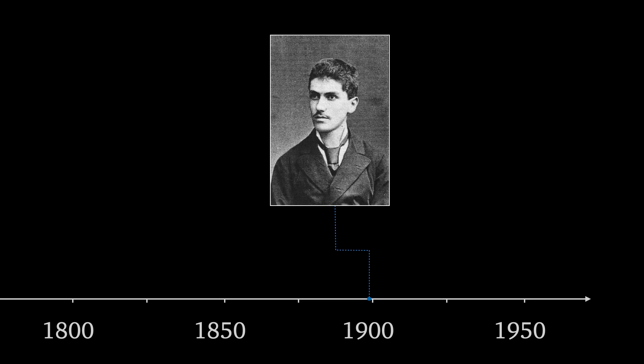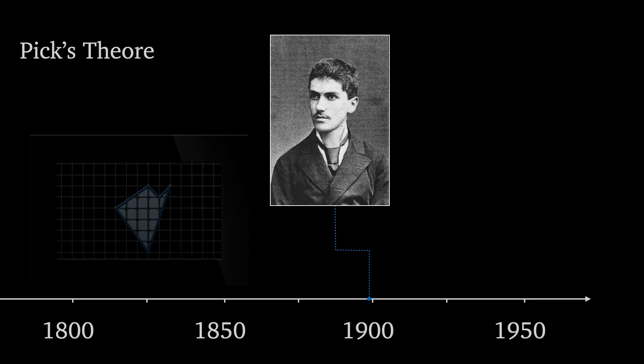Pick's theorem, described by Georg Pick in 1899, says that the area of a simple lattice polygon A is equal to the number of interior lattice points plus half the number of boundary lattice points minus one. In this video we'll prove this theorem.